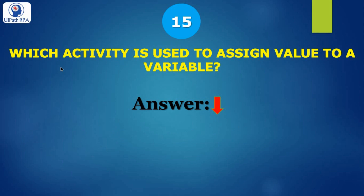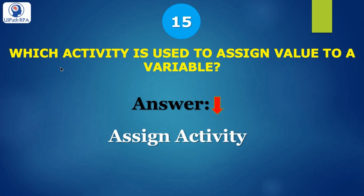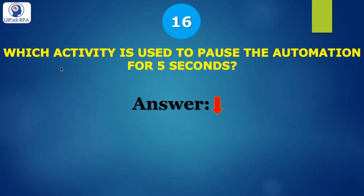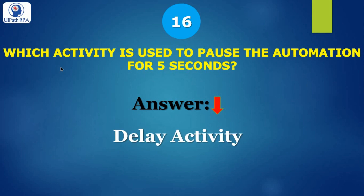Which activity is used to assign a value to a variable? Assign activity is used to assign value to a variable. Which activity is used to pause the automation for 5 seconds? If you want to put some delay in your project, you have to use the Delay activity.